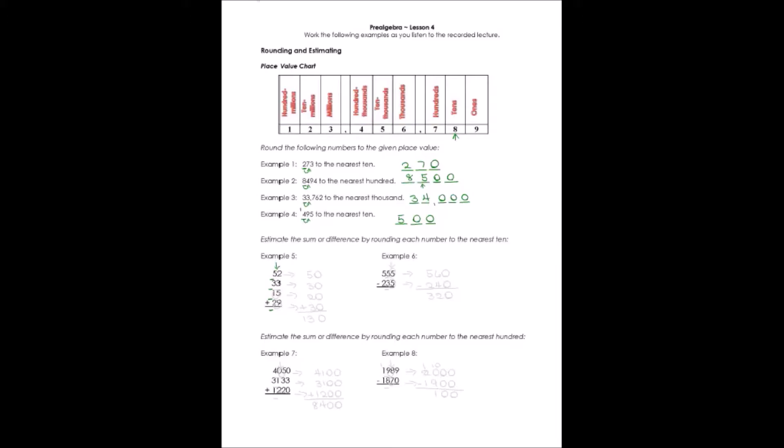We're only going to be changing the digit that we round to if we have a 5 or greater. As you can see, only the last two numbers have greater than 5. So we would change, for 52, we would round it to 50. We would round 33 to 30. We would round 15 to 20 because we had to add 1 to that other one. And we would round 29 to 30.